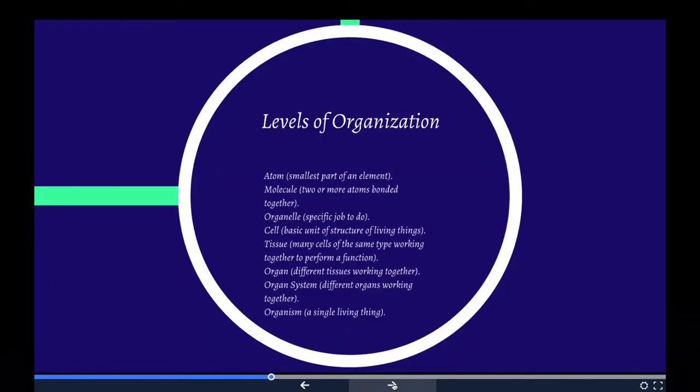Let's look at each of these quickly. The atom is the smallest part of an element, made of protons, neutrons, and electrons. A molecule is two or more atoms bonded together. An organelle is a small part inside a cell that has a specific job to do, such as a vacuole, the nucleus, the mitochondrion, the chloroplast, the Golgi apparatus, the lysosome, and the endoplasmic reticulum. The cell is the basic unit of structure and function in a living thing.